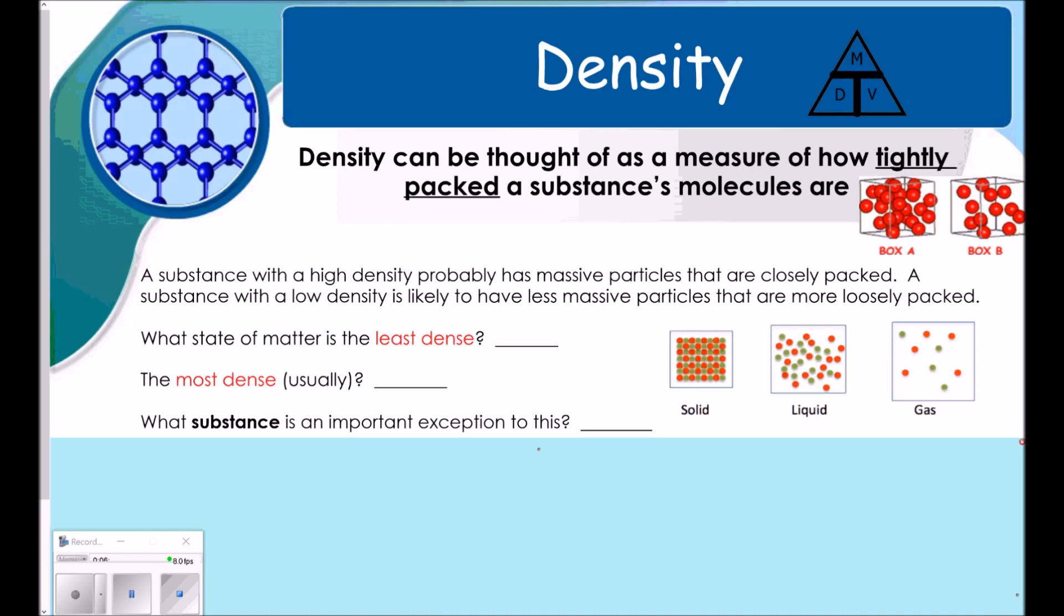So, which state of matter is the least dense? If you look at my pictures here on the right side, the least dense would be a gas. You see how loosely packed these are. The most dense would be solid. These are packed really tightly. And then at the bottom here, it says, what substance is an important exception to this? So, I want you to take a minute and think about this on your own.